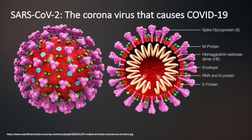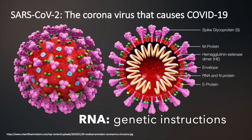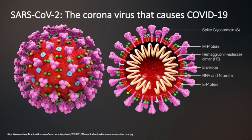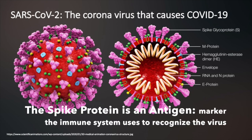Here is an illustration of the virus. The genetic instructions of this virus are made of a molecule called RNA. The outer layer of the virus surrounding the RNA is an envelope containing several other molecules that are important for allowing the virus to infect our cells, including the spike protein. I emphasize this molecule, the spike protein, because it also functions as an important marker known as an antigen that the immune system uses to recognize the virus.